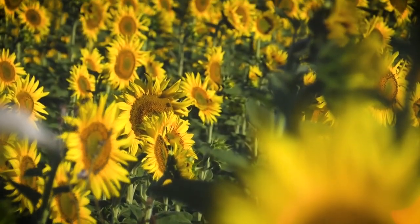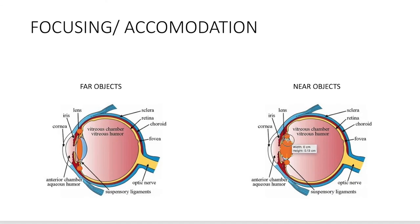For items that are far, the ciliary muscles will relax. This pulls onto the suspensory ligament, which pulls onto the lens. The lens will become more elongated and therefore, it will be able to focus the rays of distant objects into the fovea of the retina. Just remember that far objects, your lens becomes long.